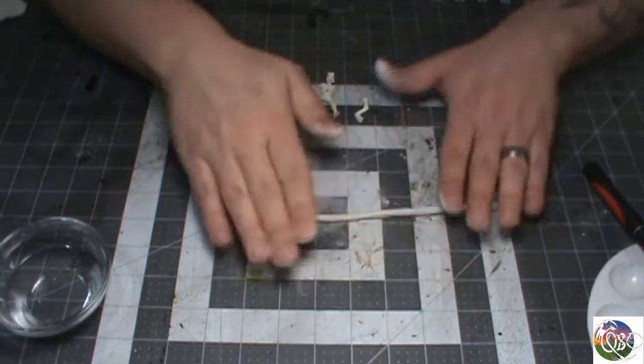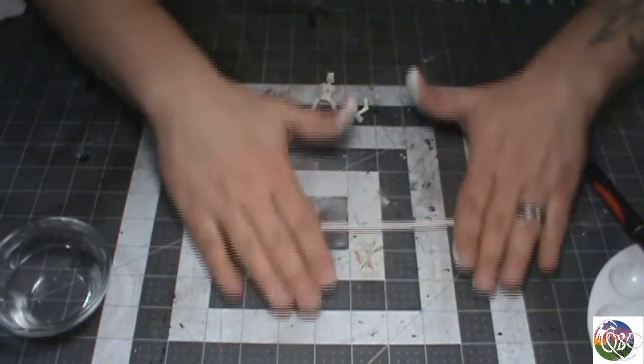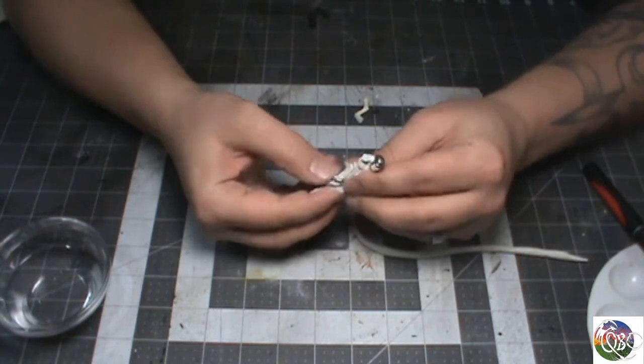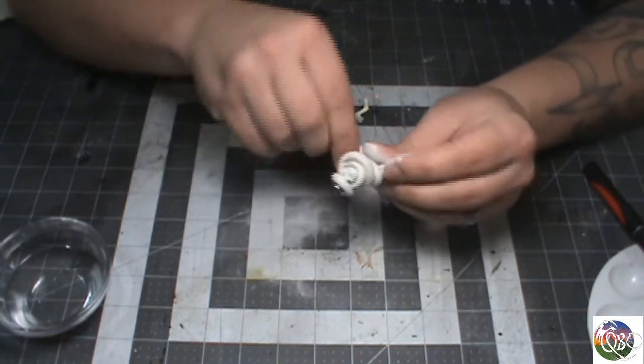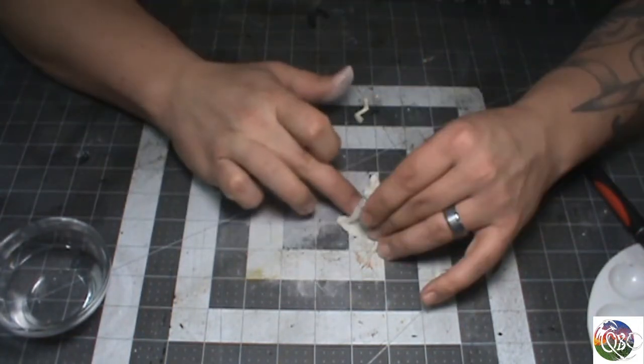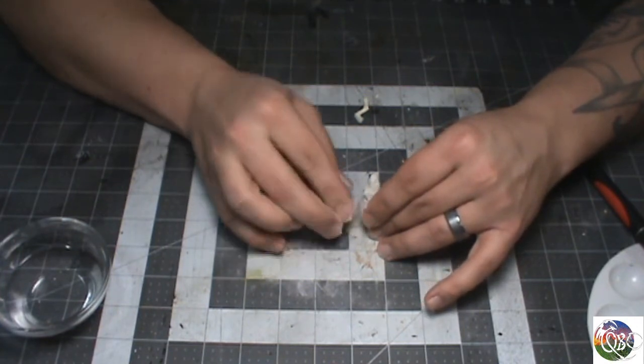And for this big full-sized skeleton, I rolled out like a string of this stuff and wrapped it around him and then smoothed it out. Get it on the mat and squish your base nice and flat and smooth it out.